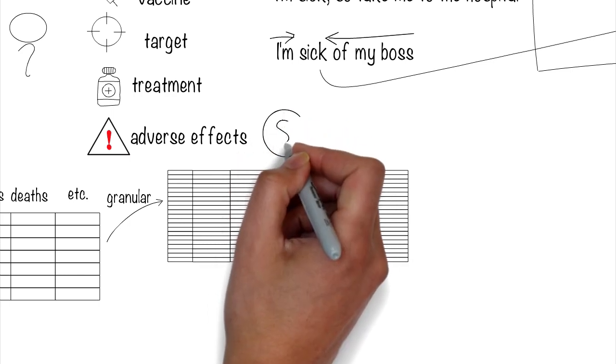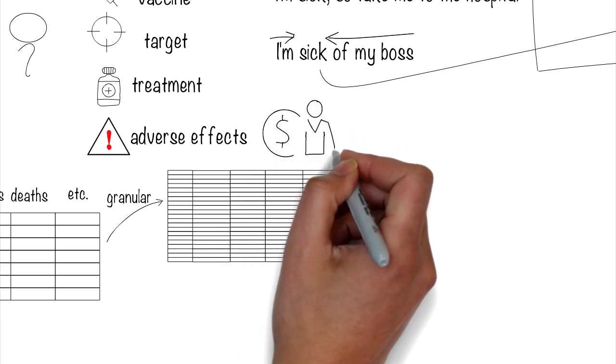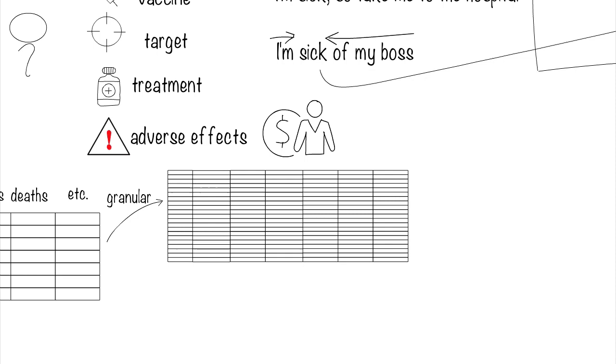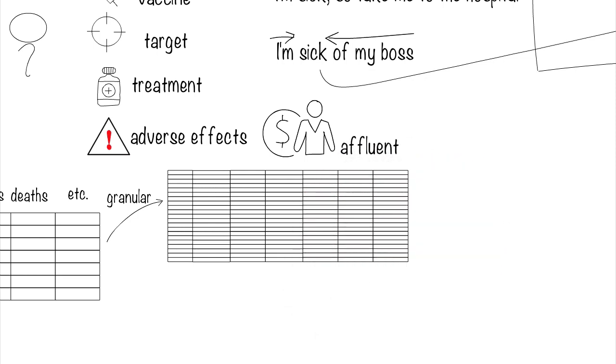Data Robot, a company in Boston, did just that and concluded that based on initial data, the virus seems to affect more affluent people first because it's likely that they can afford to travel more. Now that's an interesting find.